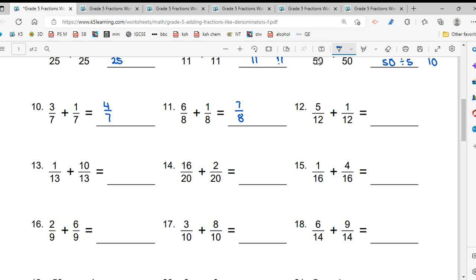6 upon 12. Ab 6 upon 12 me deyna. Dekhna, Dono 6 se divide ho sakta hai. To 6 ones are 6, 6 twos are 12. To isse kehte hai, Simplify karna. Isse keha kehte hai, Simplify karna.